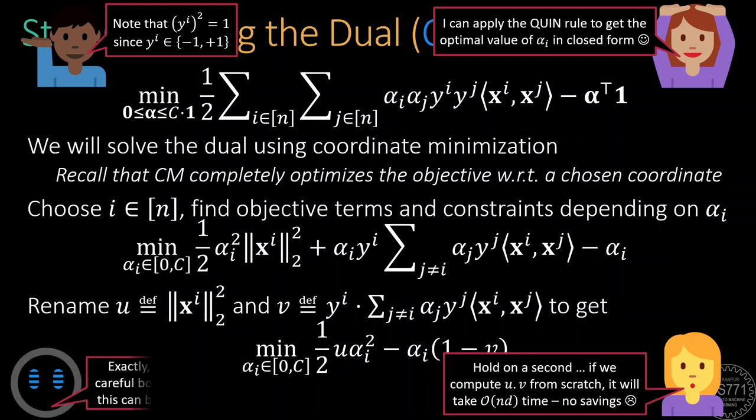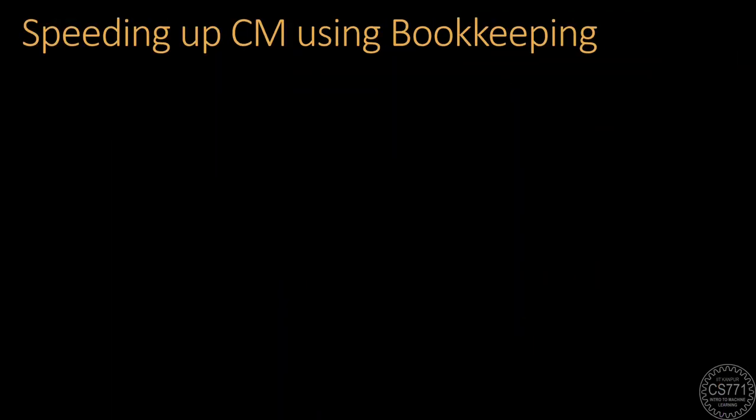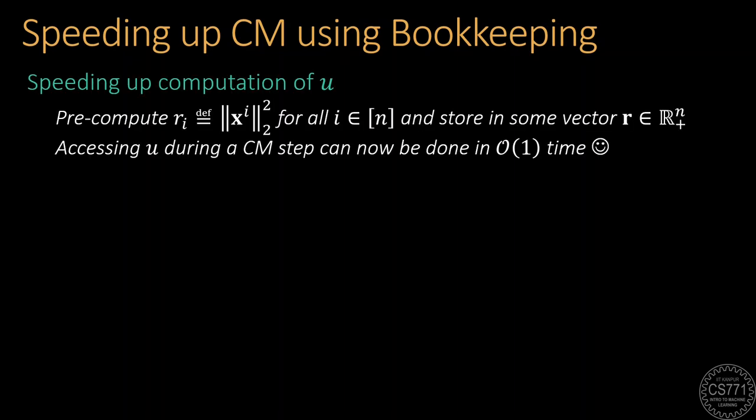Note that the terms u and v here are effectively constants since in coordinate descent, the coordinates apart from the chosen one are all treated as constants. So, are we done? Have we gotten our order d descent step? Not just yet. If we look closely, we realize that to apply the Quinn trick, we first need to calculate u and v. The problem is that the value of v will keep changing from iteration to iteration since the alpha vector keeps changing and computing v from scratch each time will itself take order nd time, dashing all hopes of an order d algorithm. To get around this, we need to do some careful bookkeeping. Let us see what this means. To speed up the coordinate minimization method, we need a way to get hold of the u and v values really fast. Doing this with the u value is simpler.